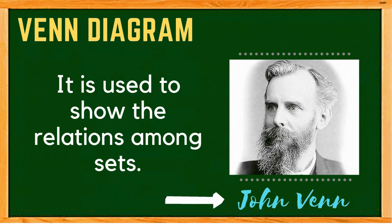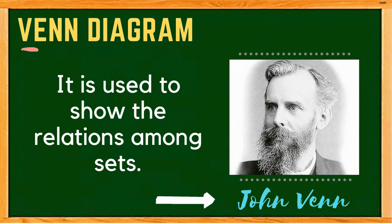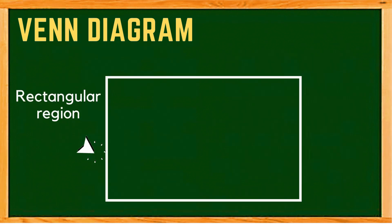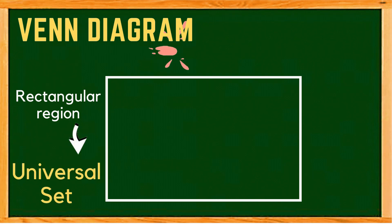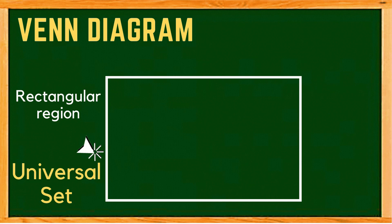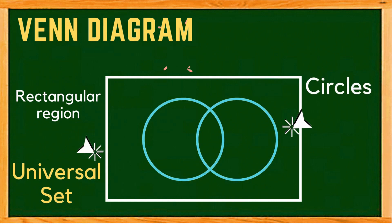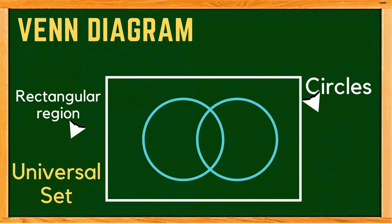It was first introduced by John Venn and it was named after him. This Venn Diagram contains a rectangular region that represents the universal set. Inside the rectangular region are the circles that represent the subsets or the sets.